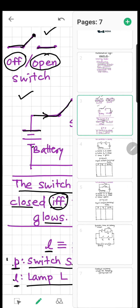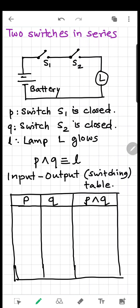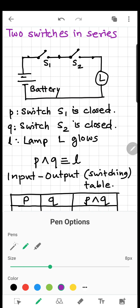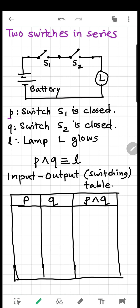Now let's talk about some more combinations of switches. Let's talk about two switches in series — switch S1 and switch S2, both connected in series in a line. Let's define some statements: statement P — switch S1 is closed; statement Q — switch S2 is closed; and L — lamp L glows.